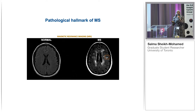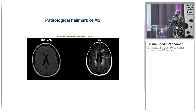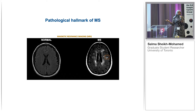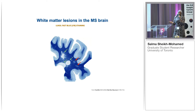Let's say a patient decides, once the disease progresses, to donate their brain to science. When this happens, we can actually do an autopsy, take a section of the brain, stain it, and get a better look at what these white spots look like. Here's what that looks like — a section of an MS brain stained for myelin, where myelin is blue.